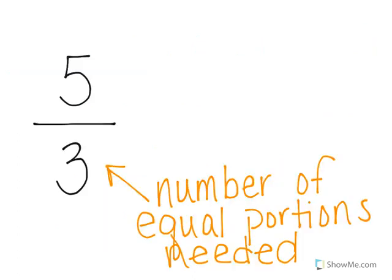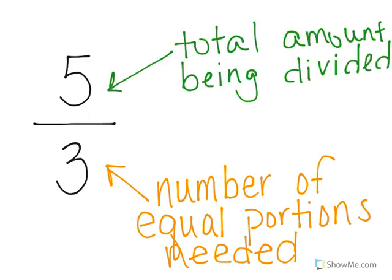When we think of a fraction in terms of division — for instance, 5 over 3 or 5 divided by 3 — we think of the denominator as the number of equal portions that are needed. So when we take the 5 and divide it up into 3, we need to divide that 5 into 3 equal portions. And we think of the numerator as representing the total amount that's being divided. In this case, we have 5 whole things being divided into 3 equal portions.